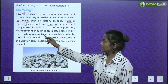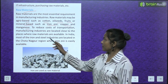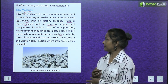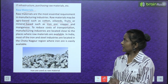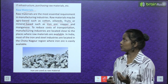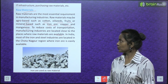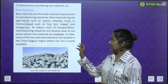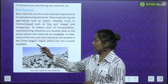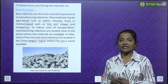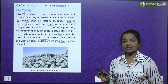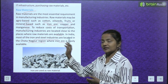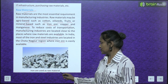To reduce costs of transportation, manufacturing industries are located close to places where raw materials are available. If an industry is far from raw materials, transport costs increase greatly. In India, most iron and steel industries are located in the Chhota Nagpur region where iron ore is easily available, used as raw material.